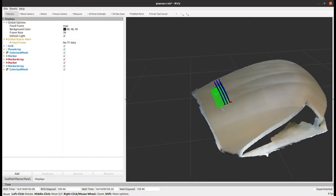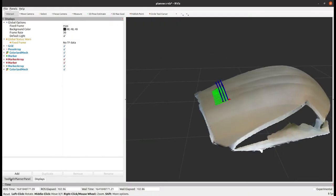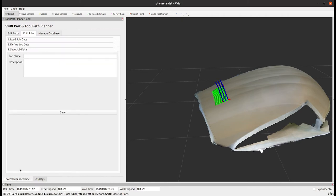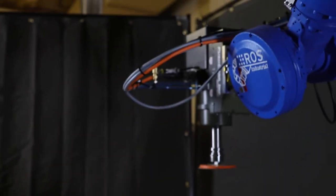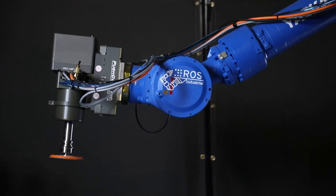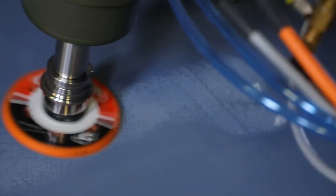The team at SWRI has developed a suite of software tools to enable autonomous robotic surface preparation that works across several different hardware configurations, including multiple sanding hardware solutions.